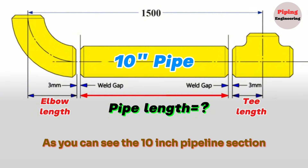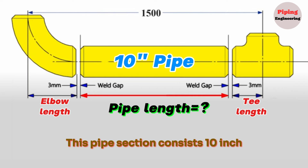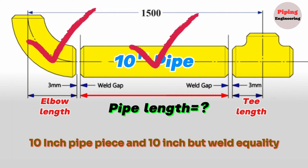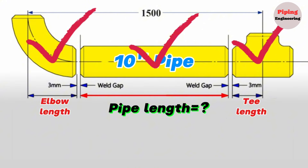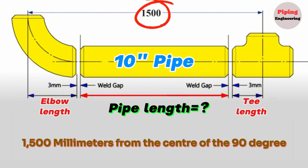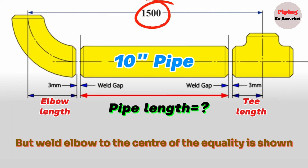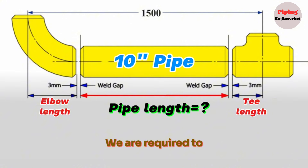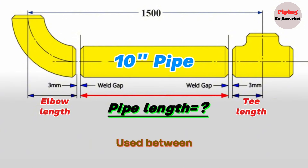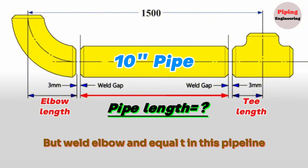As you can see, this is a 10-inch pipeline section. This pipe section consists of a 10-inch 90-degree butt weld elbow, a 10-inch pipe piece, and a 10-inch butt weld equal T. In this pipe drawing, 1,500 millimeters from the center of the 90-degree butt weld elbow to the center of the equal T is shown. We are required to calculate the length of this 10-inch pipe piece used between the butt weld elbow and equal T in this pipeline.